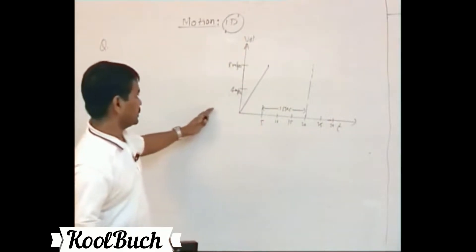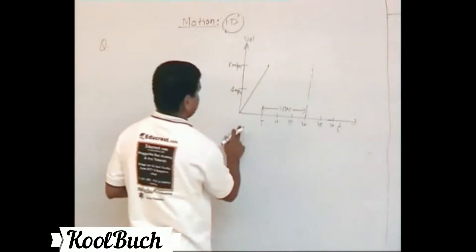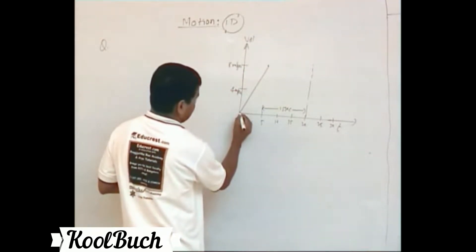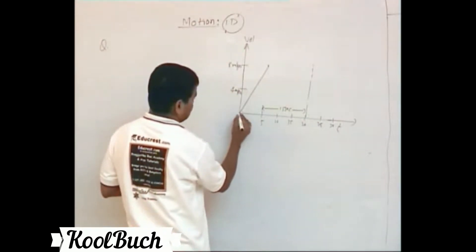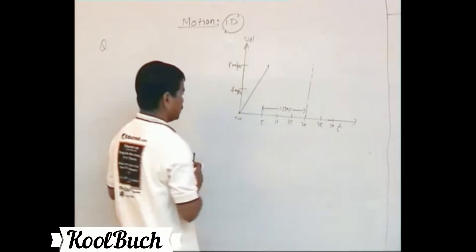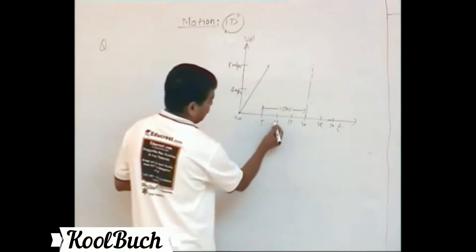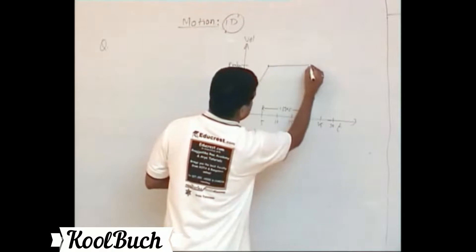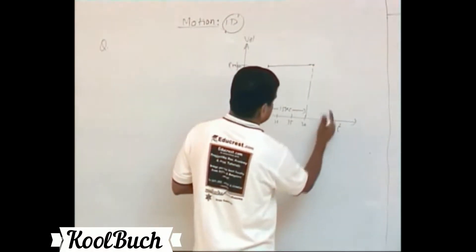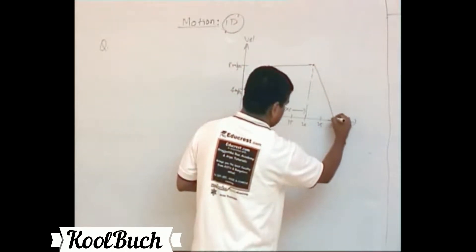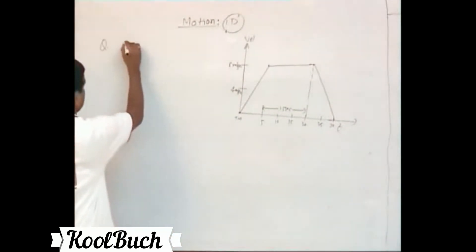We have a velocity versus time representation of a particle. This is the time axis and this is the velocity axis. Starting at t equals 0, velocity is 0. For the first 5 seconds, velocity increases from 0 to 8 meters per second. Then for 15 seconds velocity remains constant, and then for the next 10 seconds velocity is reducing to 0.